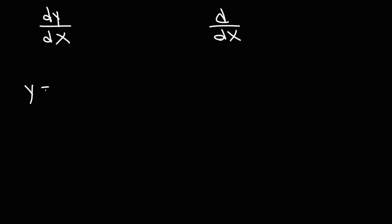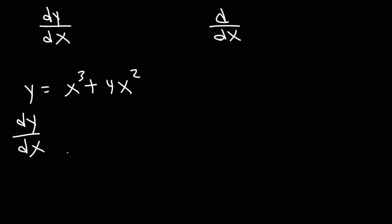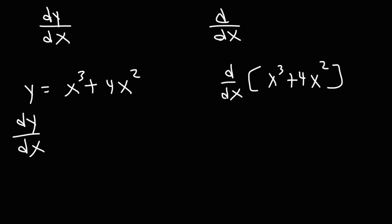Let's say that y is equal to x cubed plus 4x. What does it mean when you see dy/dx in a problem like this? And sometimes you'll see d/dx and then x cubed plus 4x. So what's the difference?